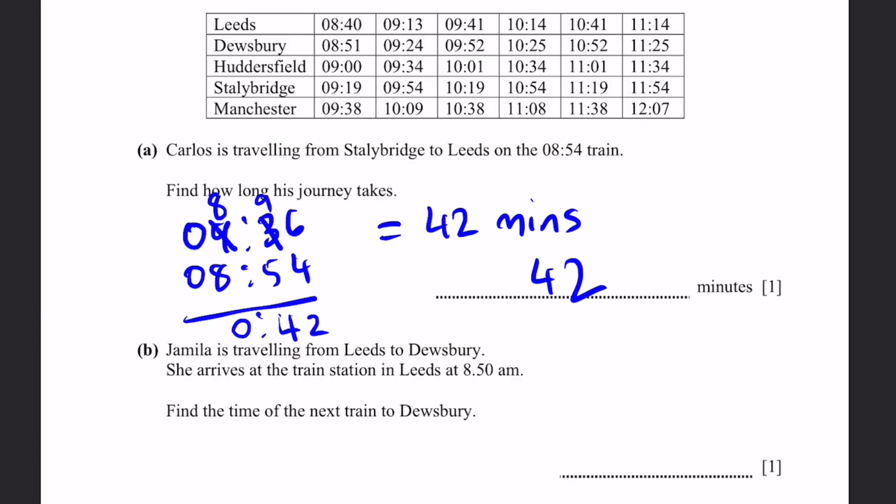Part b: Jamila is traveling from Leeds to Dewsbury. She arrives at Leeds station at 8:50 a.m. The 8:40 train has already gone, so the next train is at 9:13, which is after 8:50. She will wait 23 minutes and catch the 9:13 train.